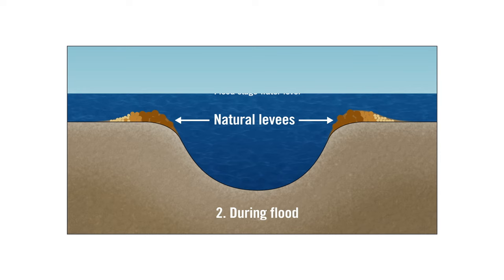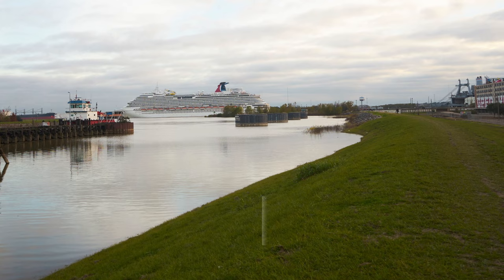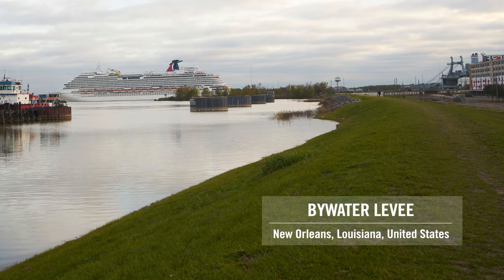When the floodwaters recede, the levees remain. Natural levees help keep water and sediment in the river channel. Man-made levees, like the ones along the Mississippi River, mimic natural levees in that they also contain floodwaters.